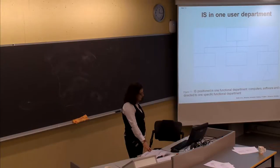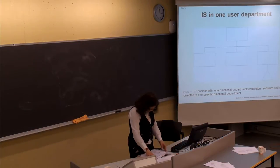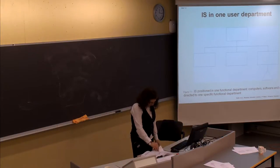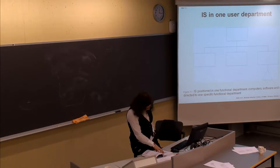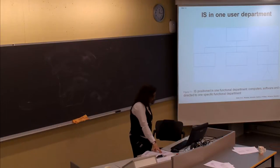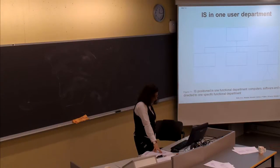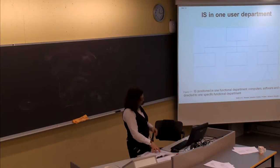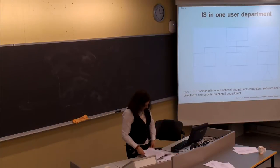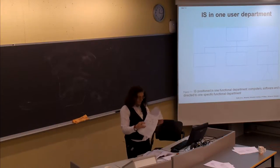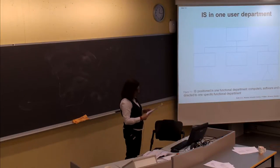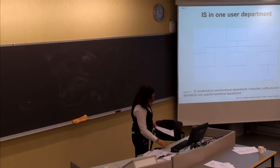The centralized model is Figure 7-1 on page 184. This is if you have one IS department with computer and software and everything, and so all questions throughout the organization are directed to the one department. That would be considered a very centralized approach — the triangle represents the IS, and that's in one specific IS department.